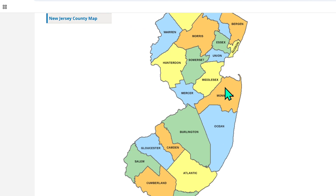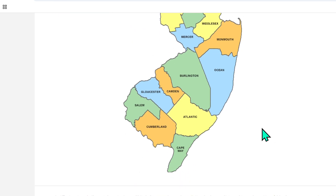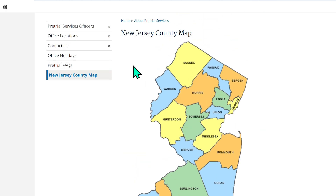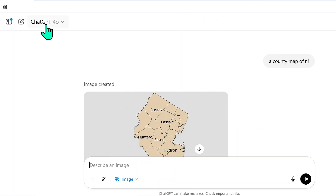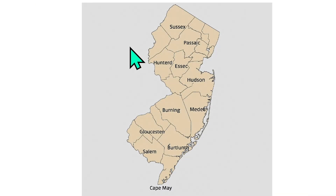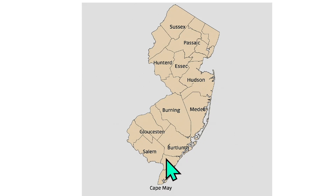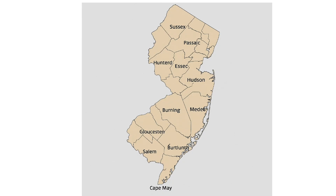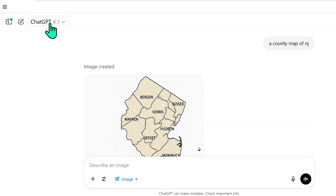Here is the New Jersey county map, and I'm going to ask ChatGPT to recreate it. In ChatGPT 4.0, I just said 'a county map of New Jersey,' and you can see this is extremely inaccurate — not only in the borders, but also in the spelling of county names. For instance, this says 'ESSEC' instead of 'Essex,' and it's located in the wrong region.